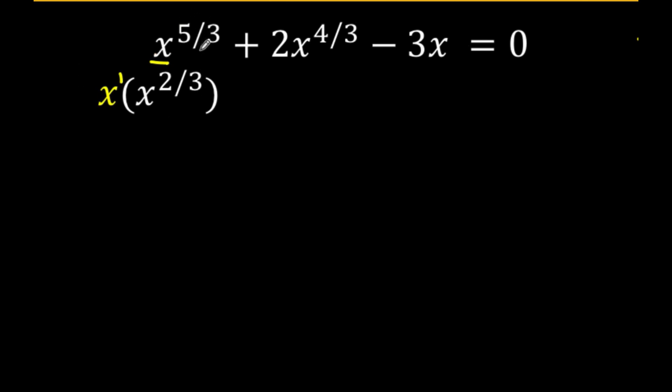So we applied here the converse of law of exponent number 1. Given the product, we can split them into two factors. Let's do the same for 2x raised to 4 over 3. We can rewrite this as 2 times x times x raised to 1 third. Then we just copy minus 3x equals 0.